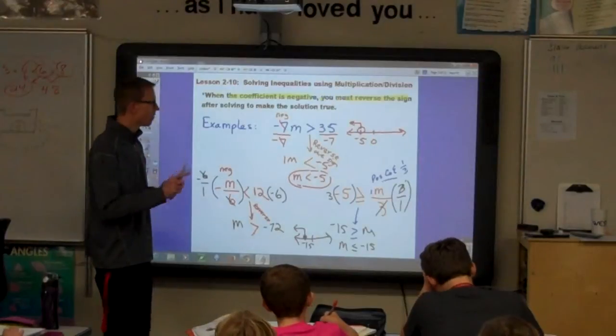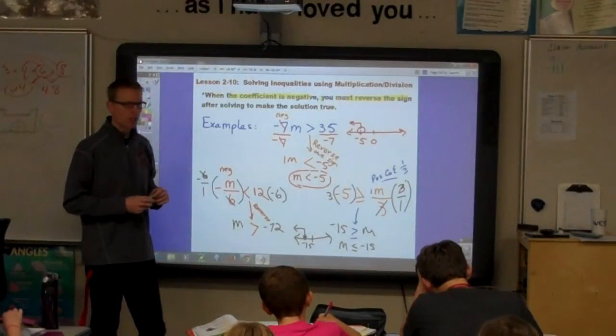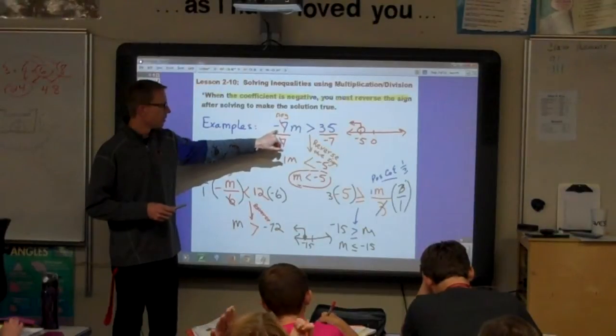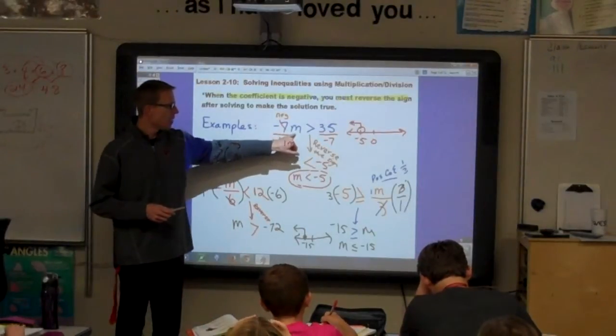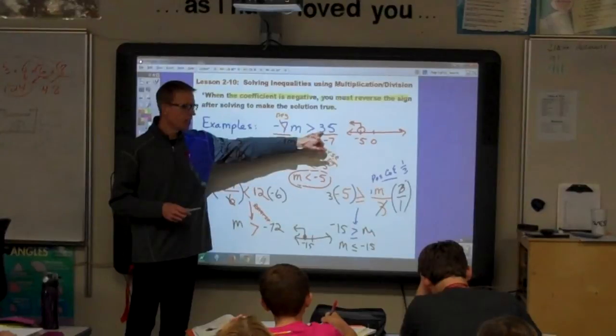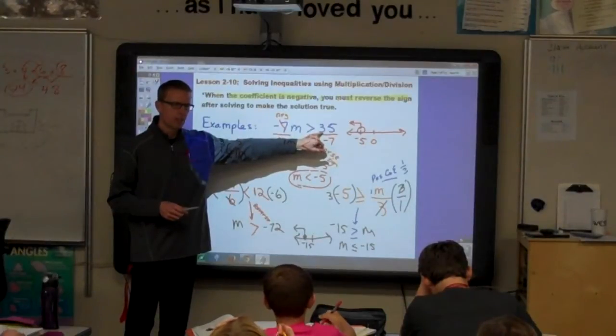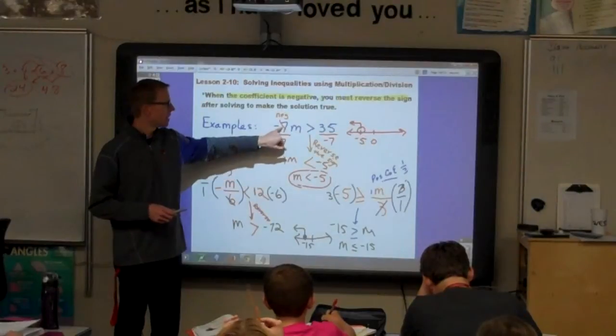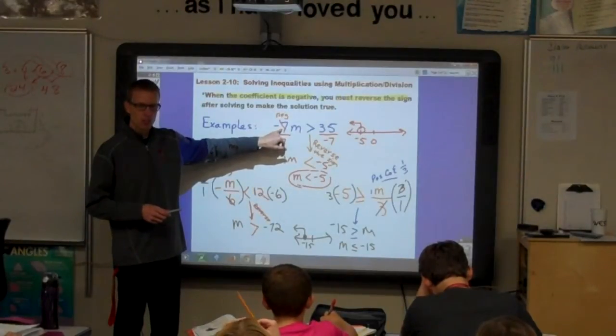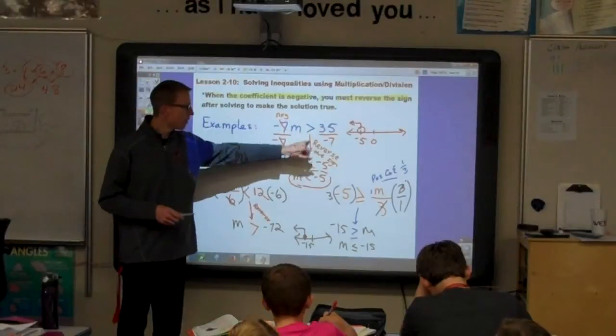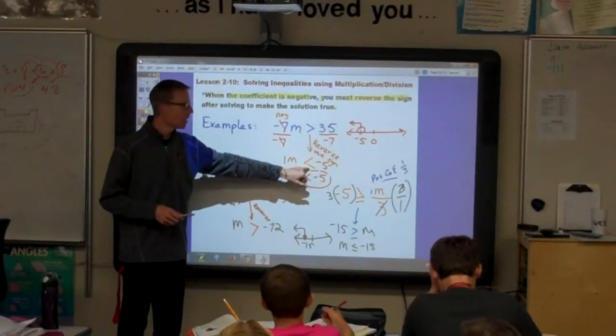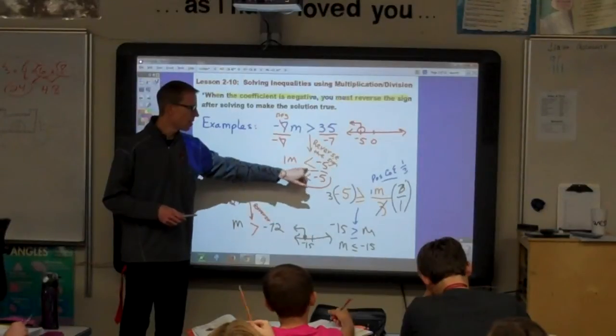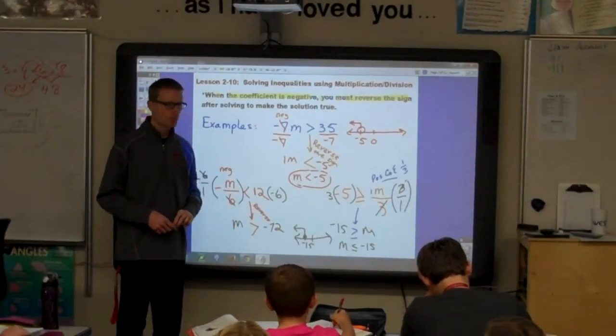So the first thing is to identify the coefficient when you're given an equation. Look at this first one. So it's negative 7m is greater than 35. Is the coefficient negative? Yeah, negative 7 is the coefficient. So at the end, we have to reverse the sign from greater than to m is less than.